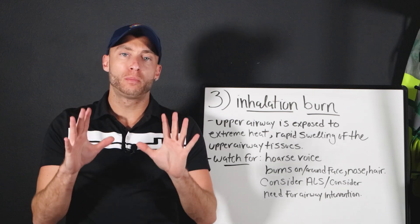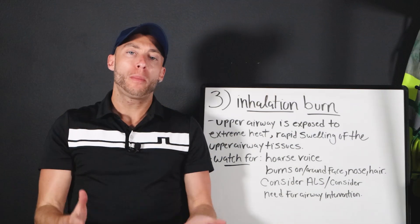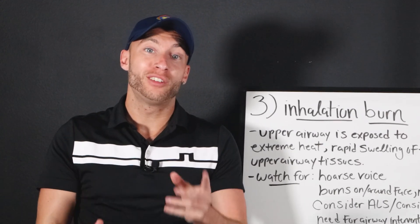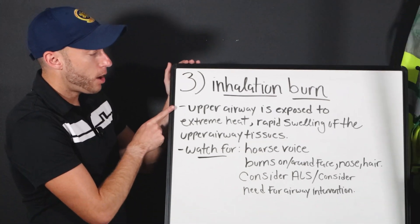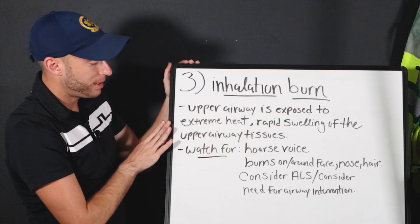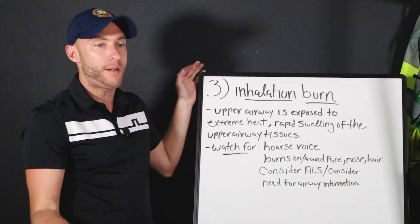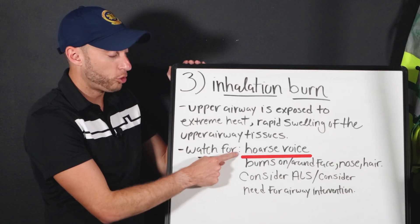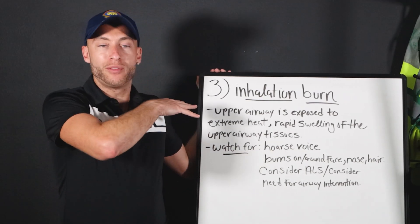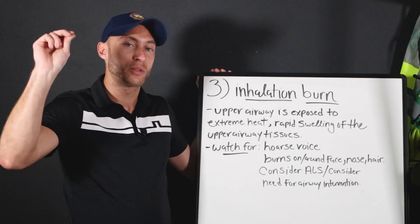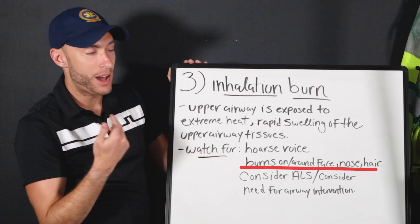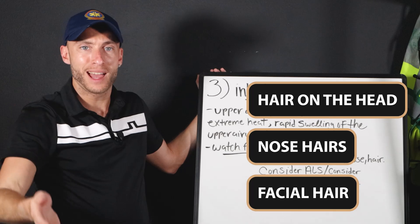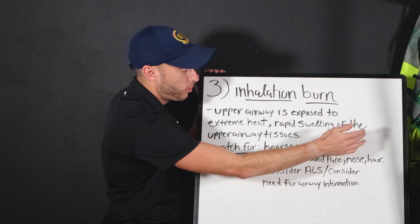When the upper airway is exposed to excessive, extreme heat, the upper airway tissues get irritated, causing them to swell, which causes stridor. So upper airway exposed to extreme heat leads to rapid swelling of the upper airway tissues. Clues include a hoarse voice, burns anywhere neck and above, and burns to the face, nose hairs, or hair on the patient's head — if those are burned, their airway was likely burned too.